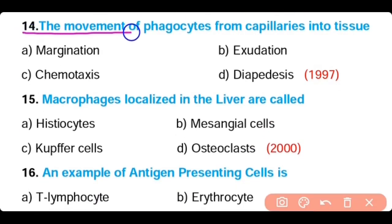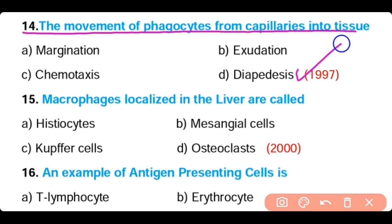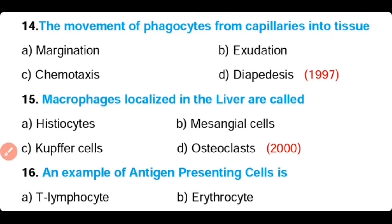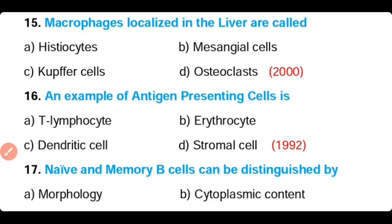Question number 14. The movement of phagocytes from the capillaries into the tissues is known as: margination, exotation, chemotaxis, or diapedesis. The correct answer is Option D. The movement of phagocytes from the capillaries into the tissue is known as diapedesis.